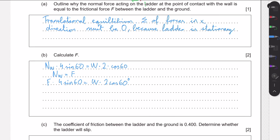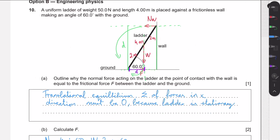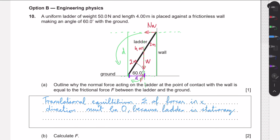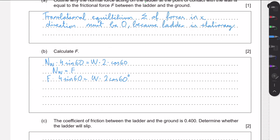We know the weight is 50 newtons. Dividing, the frictional force equals 50 × 2 cos 60° divided by 4 sin 60°, which gives us 14.4 newtons.